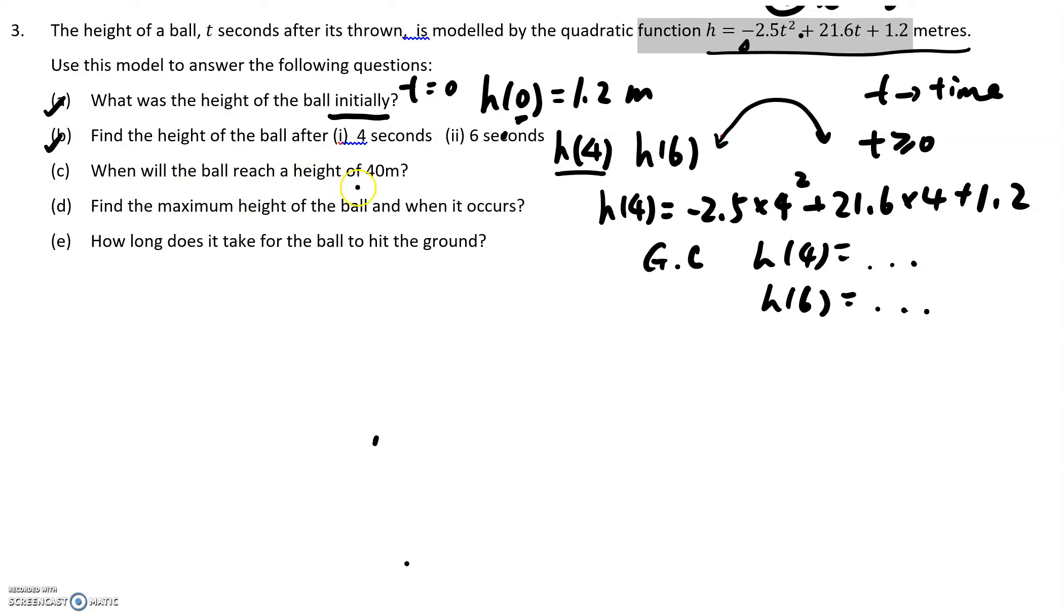Now, when will the ball reach a height of 40 meters? So in this time, a height of 40 meters indicates h equals to 40. So as easy as with c, you just sub in h equals to 40. Therefore, it's 40 equals to negative 2.5 t to the power of 2 plus 21.6 t and then plus 1.2.